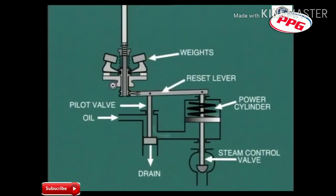This in turn allows more high-pressure oil to enter the power cylinder and raise the piston against the compression spring. This movement of the power piston opens the steam control valve and allows more steam to enter the turbine, which causes its speed to increase.